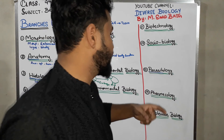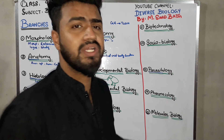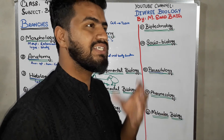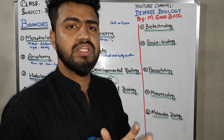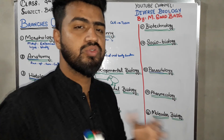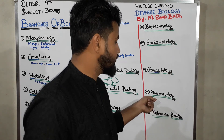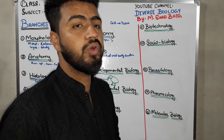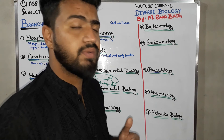Next branch is pharmacology. Here 'pharma' is used for drugs — not drugs used for addiction, but drugs basically refer to chemicals that you take into your body to get temporary relief from pain or headache. Here we are talking about medicine. Pharmacology is the branch in which we study drugs and their effects on living organisms — how they affect any organism and what work they do.